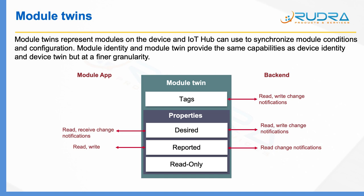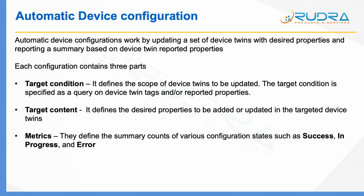Finally, one more thing I would like to take you through is device configuration. Let's say you have thousands of sensors installed in a building, and one fine morning you decide to change the frequency of the temperature sensors from a daily basis to an hourly basis. In that case, using IoT Hub, either you need to develop your own application to programmatically update all device twins with the frequency change, or go to each individual device twin and update it manually — in either way, it's an extremely tedious task. To avoid that, you can take advantage of automatic device configuration available in IoT Hub. Automatic device configurations work by updating a set of device twins with the desired properties and reporting a summary based on device twin reported properties.